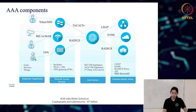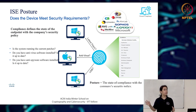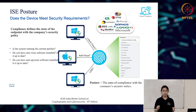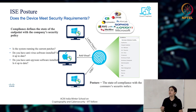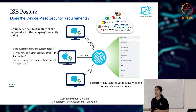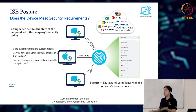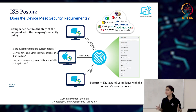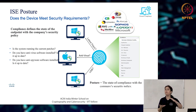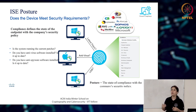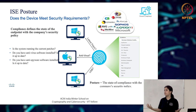Now we'll talk about compliance. ISE posture asks: does your device meet the security requirements set by your organization? Any organization will have a security policy defining that all users on Windows or Mac systems must have a bare minimum level of security to connect to internal networks. Compliance defines the state of the endpoint relative to the company's security policy.